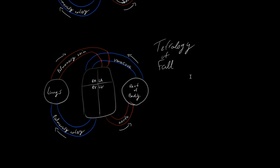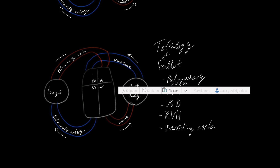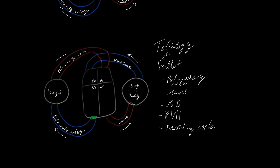The tetralogy of Fallot has four characteristics: pulmonary valve stenosis, a ventricular septal defect, right ventricular hypertrophy, and an overriding aorta. The pulmonary valve is closed off, so pressures in the right ventricle become higher. Blood arriving from the vena cava through the right atrium to the right ventricle has to find another way, so we see a ventricular septal defect.